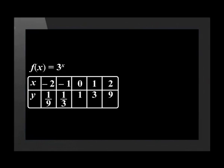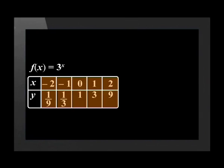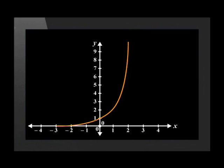If we take the x-values for f of x from negative 2 to positive 2, we will have our coordinates at negative 2, 1 ninth, negative 1, 1 third, 0, 1, 1, 3 and 2, 9. After plotting these points, we get this function.